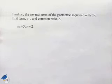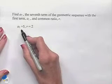Now let's look at another problem dealing with geometric sequences. Find a₇, the seventh term of the geometric sequence with the first term a₁ and common ratio r. We're given that a₁ is equal to 5 and r is equal to 2.